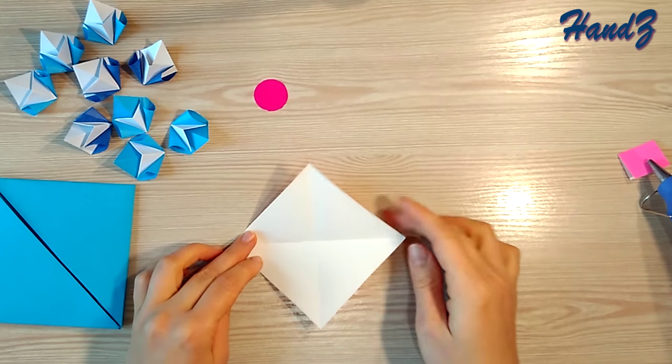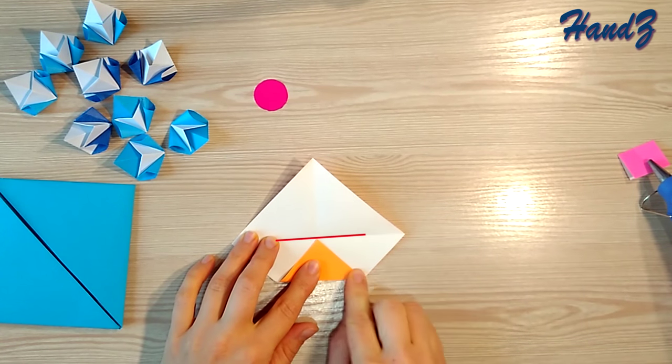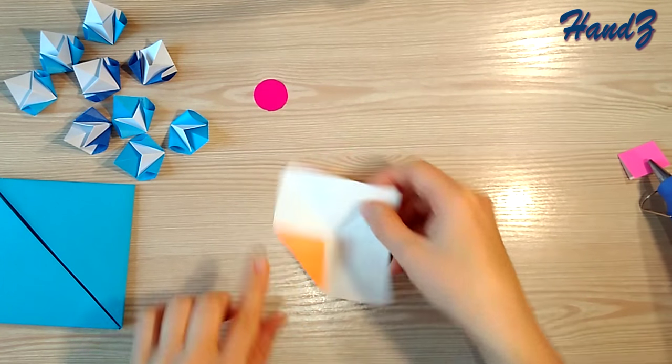Now take the bottom corner and bring it to the center. Make sure it matches the vertical crease. Do the same with the opposite corner.